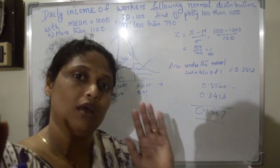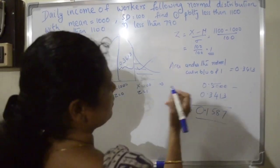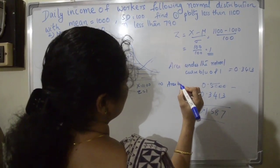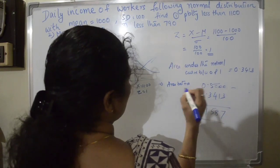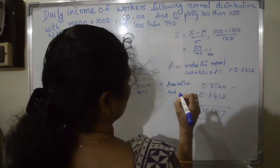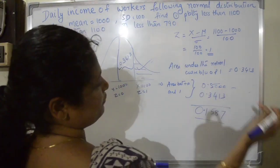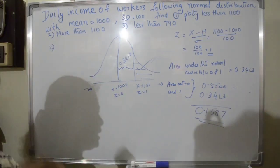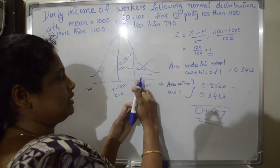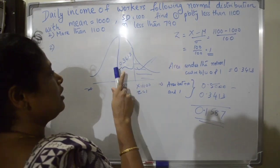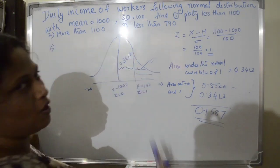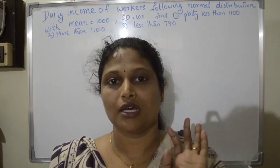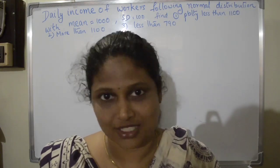This area corresponds to the region between positive infinity and Z equals 1 on the normal curve. The next question asks about the probability of income less than 790.